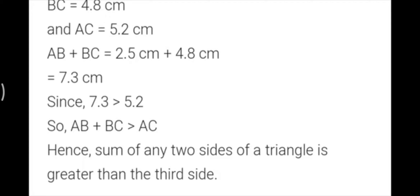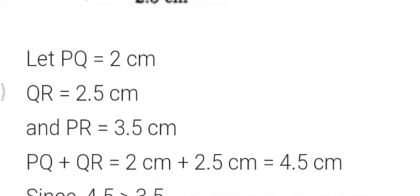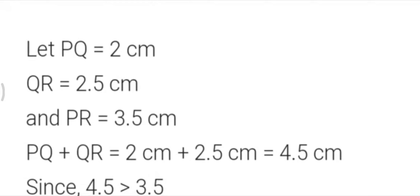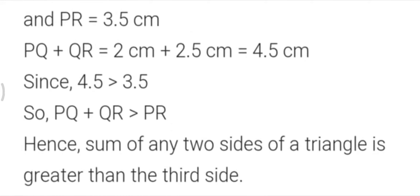Now case 2. Here I have drawn triangle PQR. When measured: PQ is 2 cm, QR is 2.5 cm, and PR is 3.5 cm. Now adding two sides, PQ plus QR equals 2 plus 2.5 equals 4.5. You can see the sum of two sides, 4.5, is greater than the third side, PR which is 3.5. Hence the sum of any two sides of the triangle is greater than the third side.